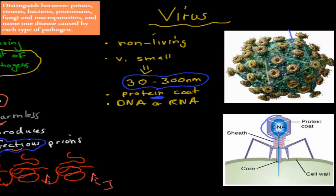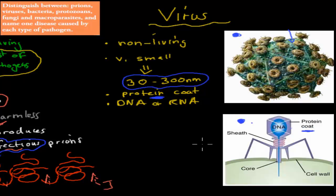This is a bacteriophage. The ones down here are the ones which invade bacteria, and the ones on top are the ones which invade our human cells. These bacteriophages invade bacteria, and these invade our cells. You can see that in both cases they have a protein coat — like their armor. And inside their protein coat is their precious DNA. A bacteriophage will actually inject its DNA into a bacterial cell, thereby taking over the cell.